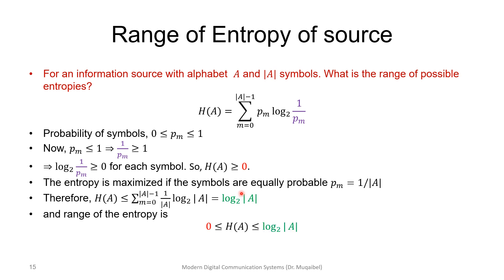So the range of entropy is given by: 0 ≤ H(A) ≤ log₂(|A|). Thank you for being good listeners. We have covered entropy and touched on memoryless sources. You can revisit the videos if you want to review anything, and we'll see you in coming videos.